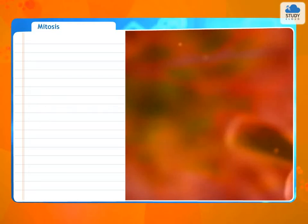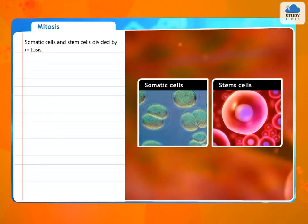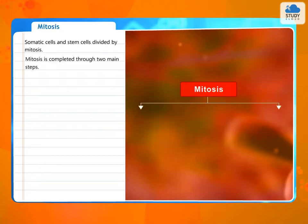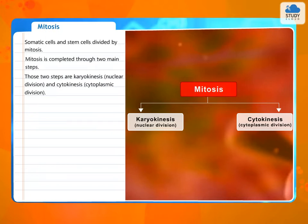Mitosis. Somatic cells and stem cells divide by mitosis. Mitosis is completed through two main steps. Those two steps are karyokinesis, nuclear division, and cytokinesis, cytoplasmic division.